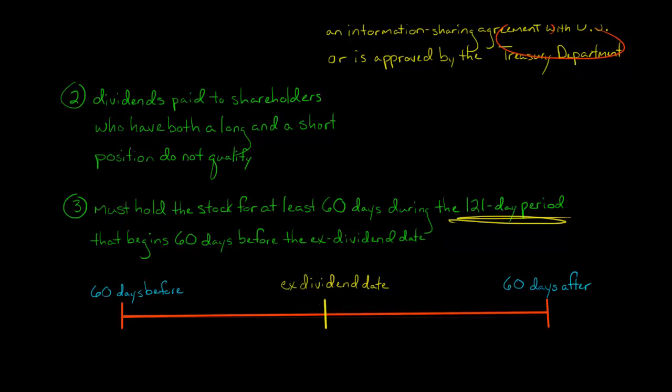You've got this ex-dividend date, which is the date where the stock's no longer going to pay the dividend. We've got the ex-dividend date, 60 days before, and then 60 days after. So we have 121 days here. This time period is 60 days, then the ex-dividend date itself is one day, and then 60 days after. So 60 plus one plus 60 is 121 days.